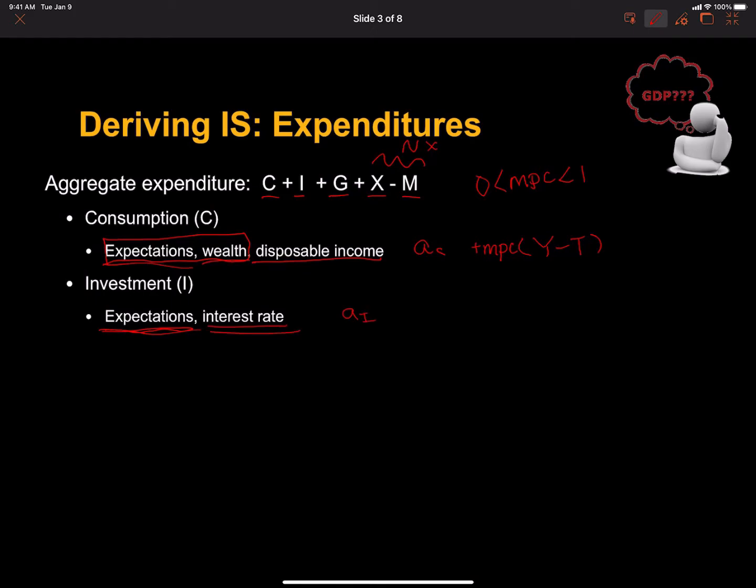Now, some firm spending depends on the interest rate. Firms often have to borrow to finance capital expenditures. And if they're not borrowing, then the interest rate is the opportunity cost. So there's a negative relationship between the interest rate and investment. We're going to add to this determinant here investment as a function of the interest rate. And as the interest rate increases, we should see all else constant investment decrease.